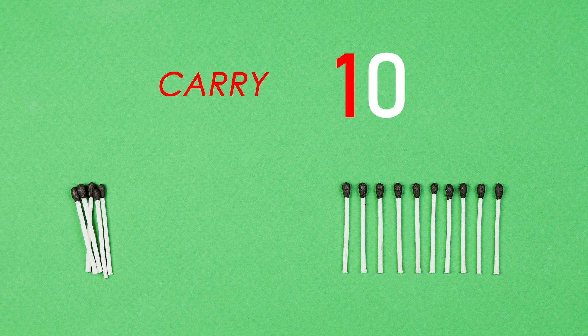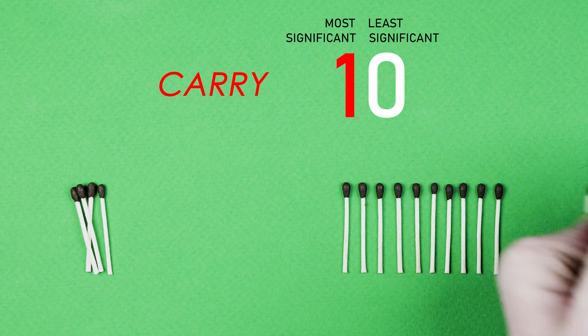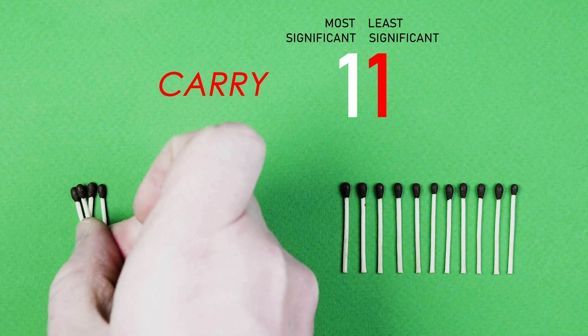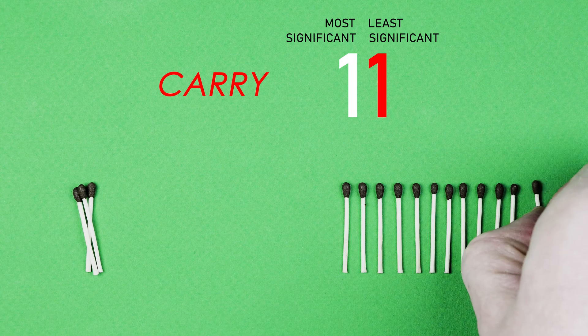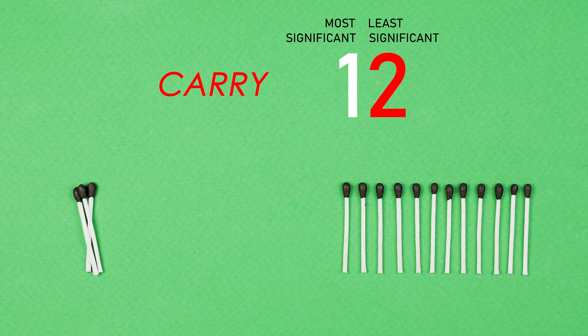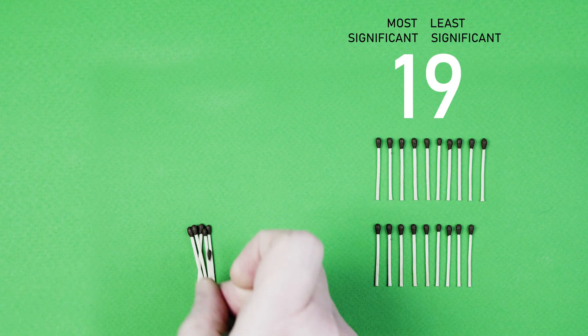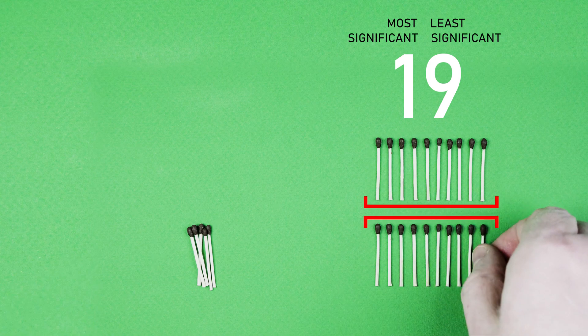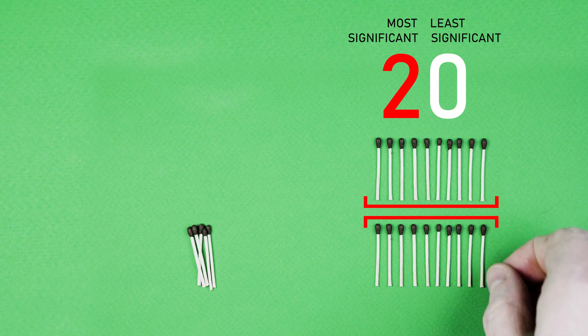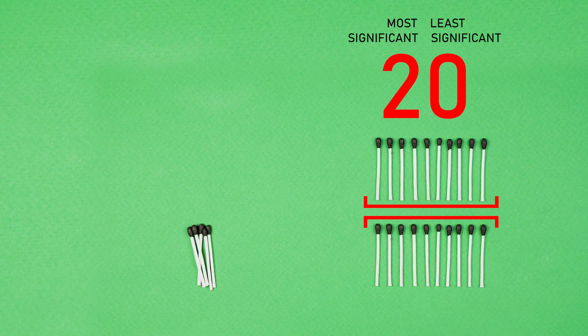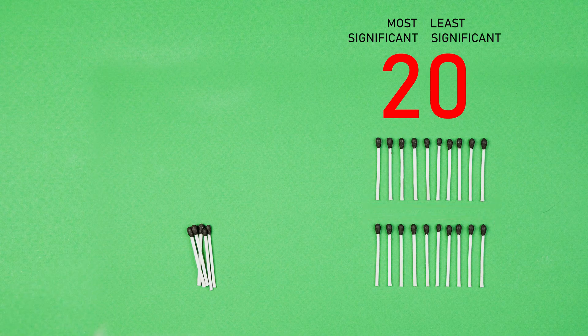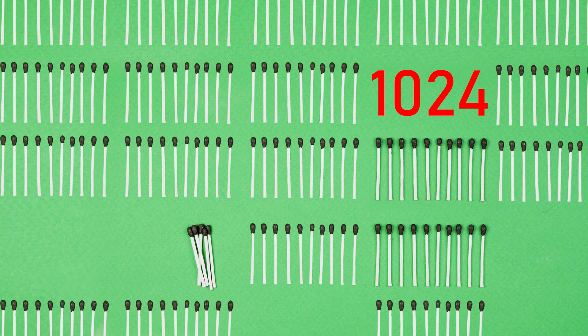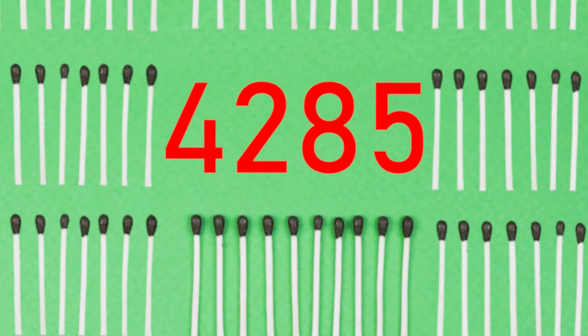As we go on counting, the least significant digit increments and the most significant digit remains intact. When we reach another 10, we have to increment the most significant digit while the least significant one is replaced by 0. If we kept moving these matches for a while, their number could grow up to several thousand, and the digit count would increase accordingly.